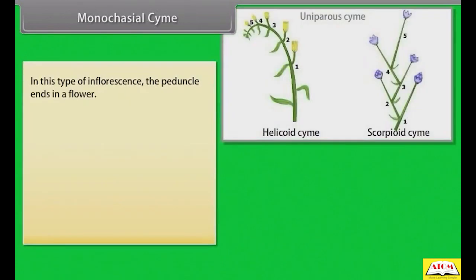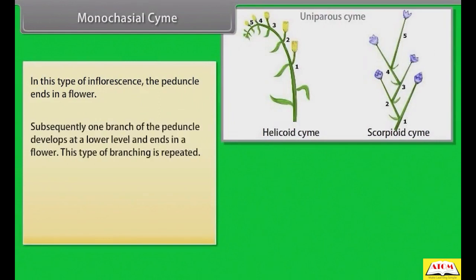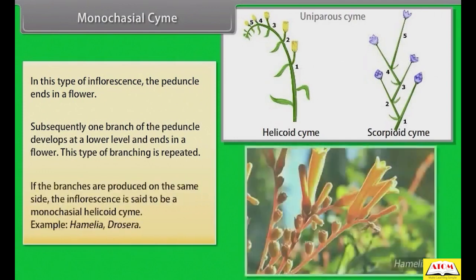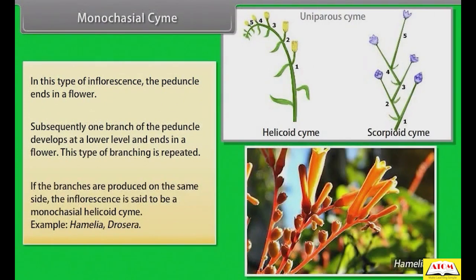In monochasial cyme, the peduncle ends in a flower. Subsequently, one branch of the peduncle develops at a lower level and ends in a flower; this type of branching is repeated. If the branches are produced on the same side, the inflorescence is said to be a monochasial helicoid cyme. Example: Hamelia, Drosera.